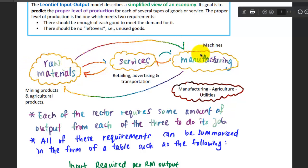You need to have input from the manufacturing industry, which is the machine, and you need to have the service sectors as well, such as retailing, advertising, and transportation to deliver your products to the consumer.